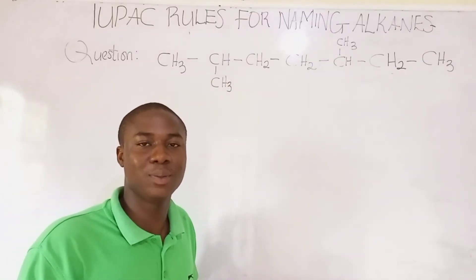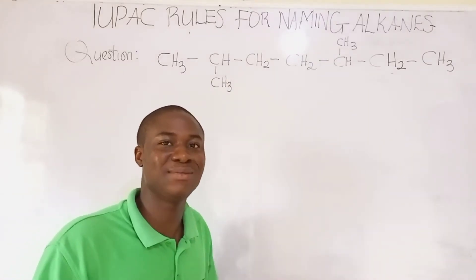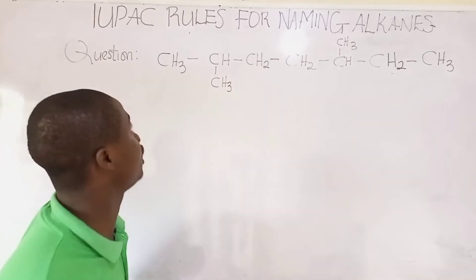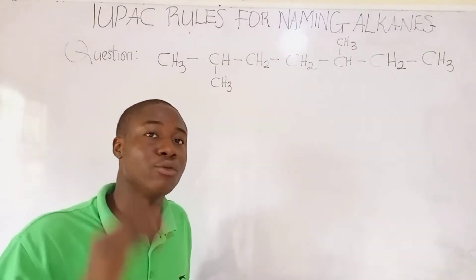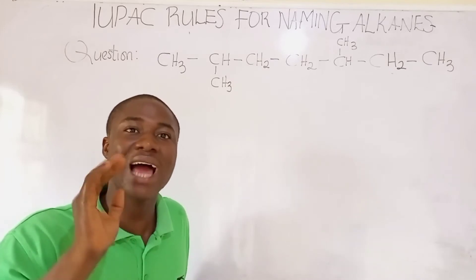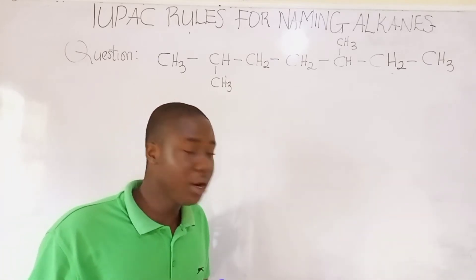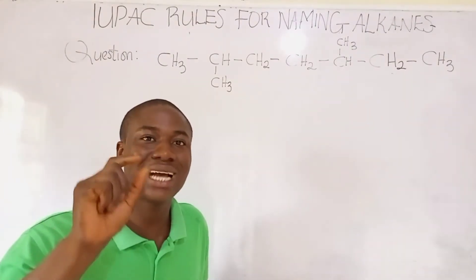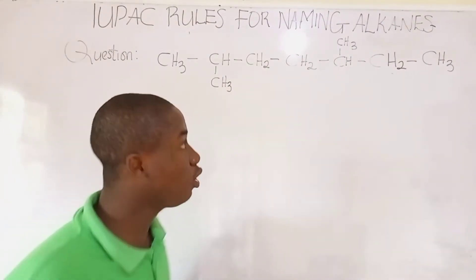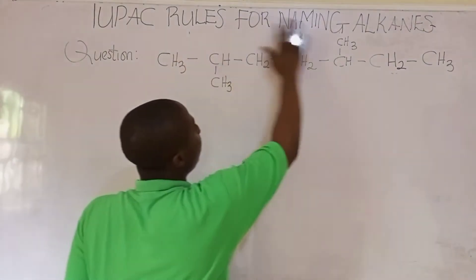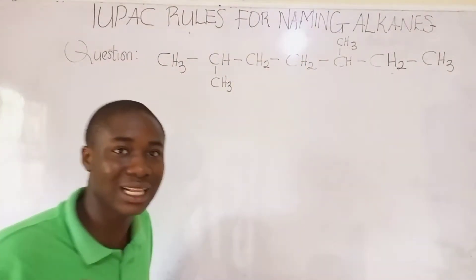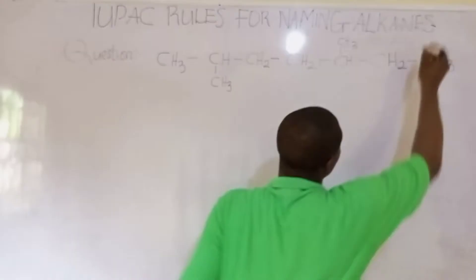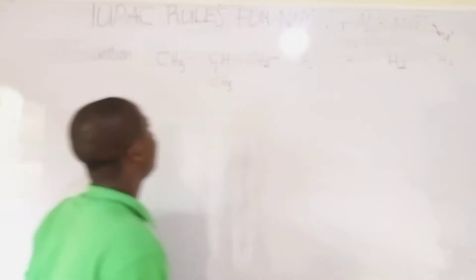Welcome back to today's video episode on Chemistry Made Easy with Brad Edo. In today's video lesson, I'll be teaching on the IUPAC rules for naming alkanes. We already know that alkanes are a group of compounds that are single bonded — meaning all the bonds forming the compound are single bonds — and alkanes are sp3 hybridized.